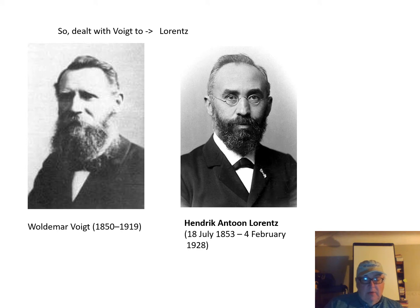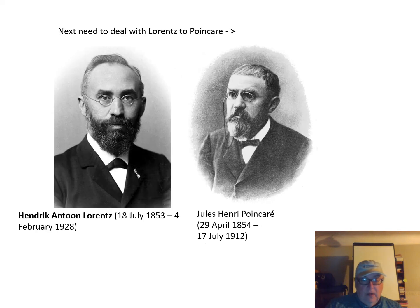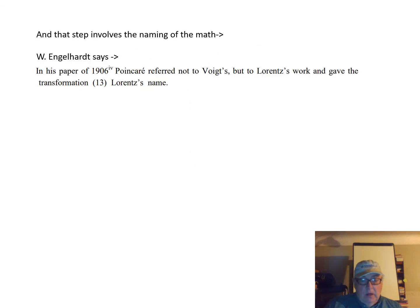There is a picture of Voigt and Lorentz. The next step involves Lorentz to Poincaré, and specifically the naming of the mathematics. Engelhard says that in Poincaré's paper of 1906, Poincaré referred not to Voigt's but to Lorentz's work, and gave the transformation Lorentz's name — so Poincaré named the math the Lorentz Transformations.